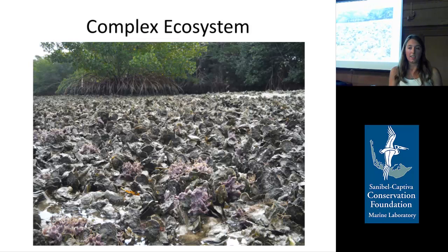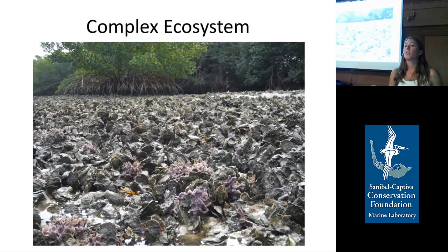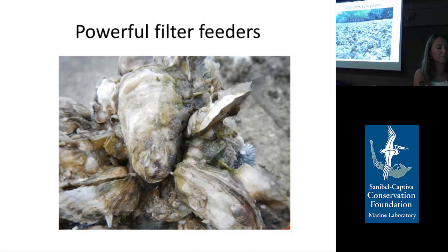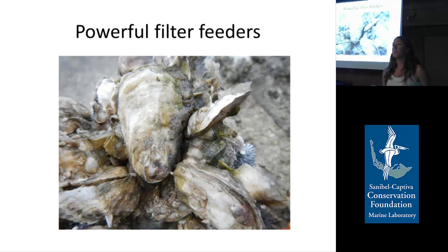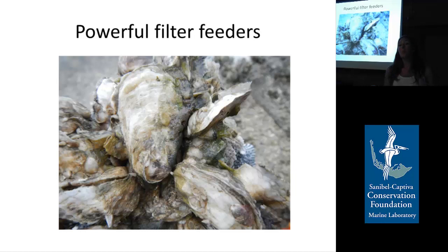In North America, filtration by oyster reefs has decreased by 85%. Historically, oyster reefs could filter entire bays, but today that's not the case. Oyster reefs have such a strong effect on their surroundings because they have oysters, which are very powerful filter feeders — an adult oyster can filter 1 to 34 liters of water per hour.